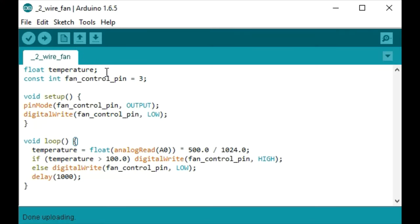For this first code, we will declare a temperature variable. We will set pin 3 on the Arduino as our fan control. We'll initialize that pin as an output and set it to low to begin with. In our loop, we will measure our temperature using this command here. And if the temperature is greater than 100 degrees, we will command the fan control pin high. Otherwise, we will command it to be low, and then we will repeat this every one second.